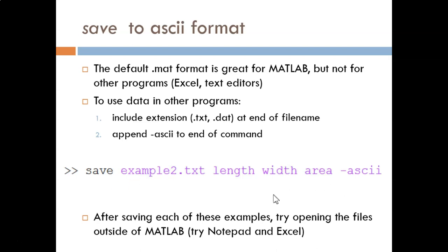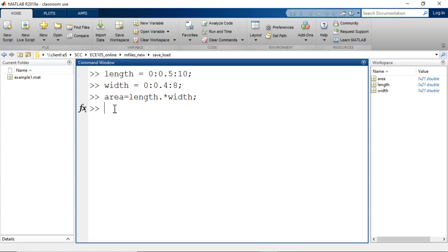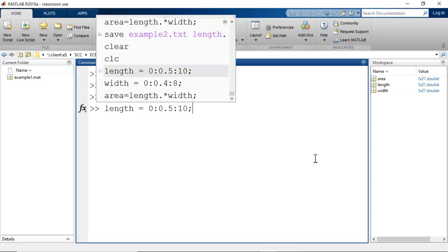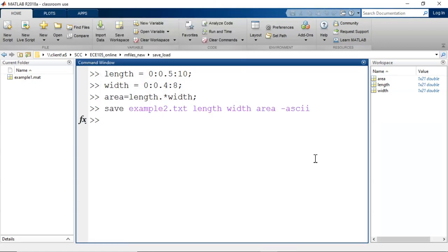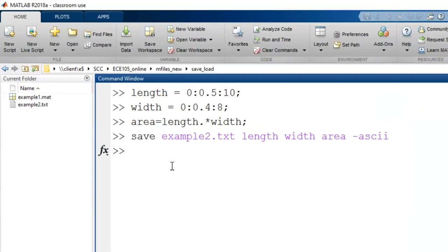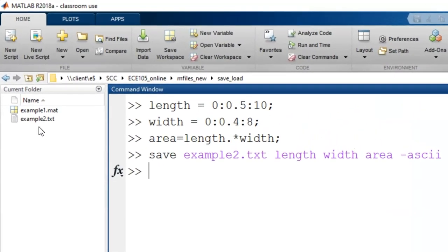Include the appropriate extension on your file name, I prefer .txt, and after the list of variables, type '-ascii'. Let's look at this in MATLAB. I enter the command. After processing, this new file appears in my current folder. Notice the icon for the .txt file is different than the icon for the .mat file.